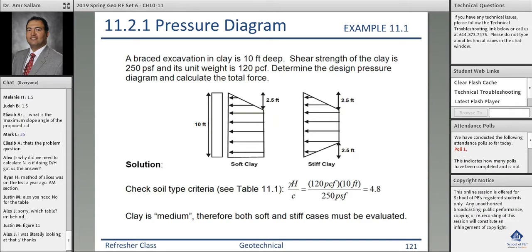Let's get you an example: a braced excavation in clay, 10 feet deep, shear strength of the clay is 250, and unit weight 120. Determine the design pressure diagram and calculate the total force. Total force is the area of the diagram, so I need to know what type of clay it is - is it soft or stiff clay?